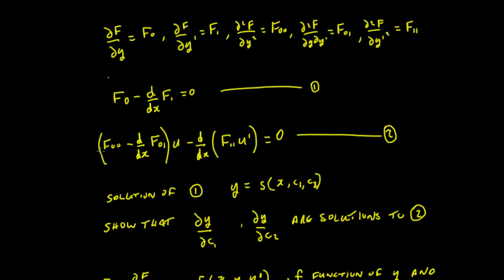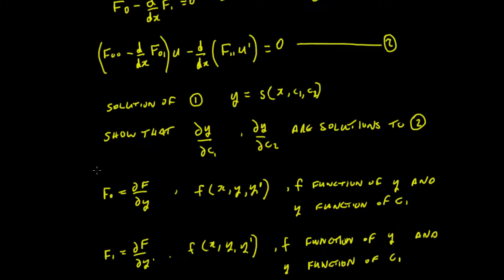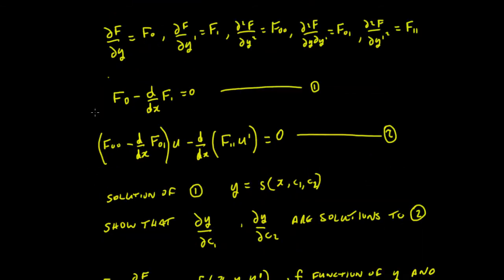So that's what we're going to show just now. We know that the function F0 — from the very first line up here, which you've seen in previous videos — just simplifies things and stops it from looking so garish. So we'll write: partial f by partial y equals F0, partial f by partial y-prime equals F1, the second derivative with respect to y is F00, the mixed derivative is F01, and the partial derivative with respect to y-prime is F11.